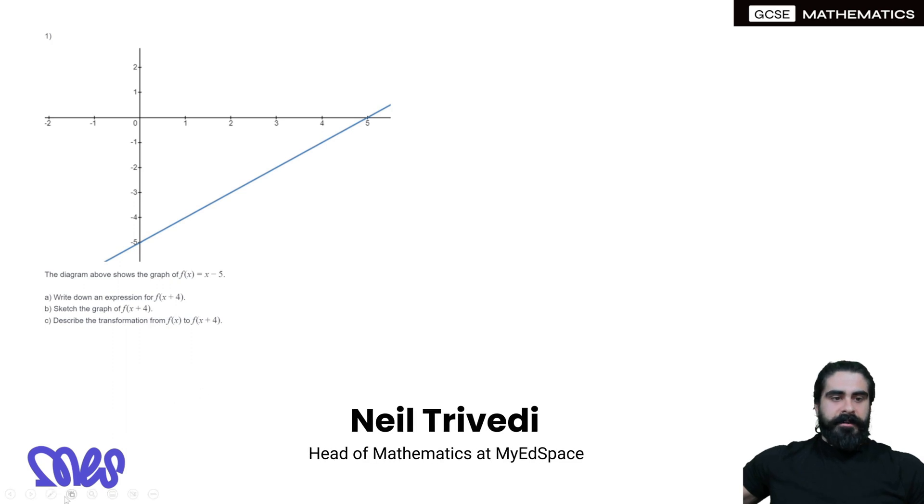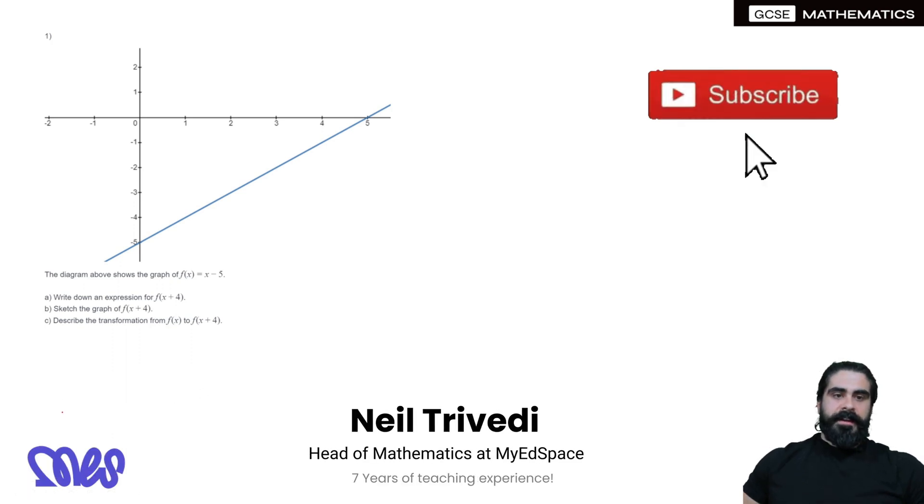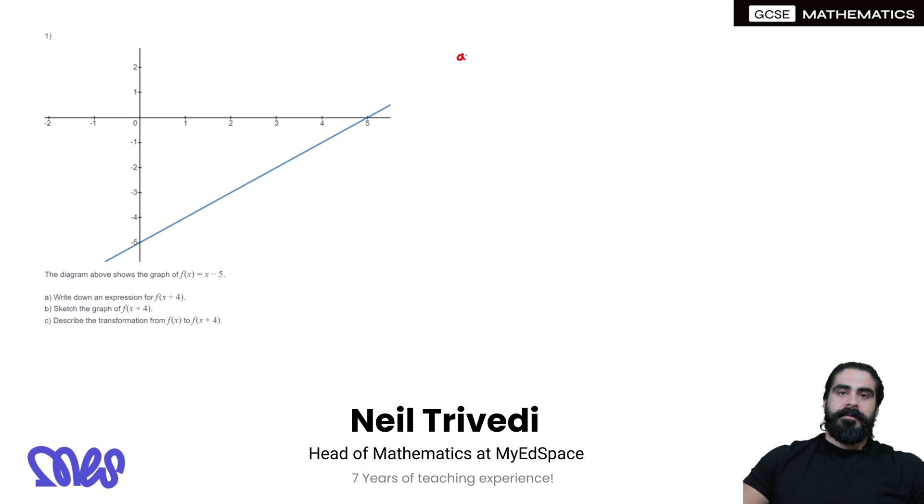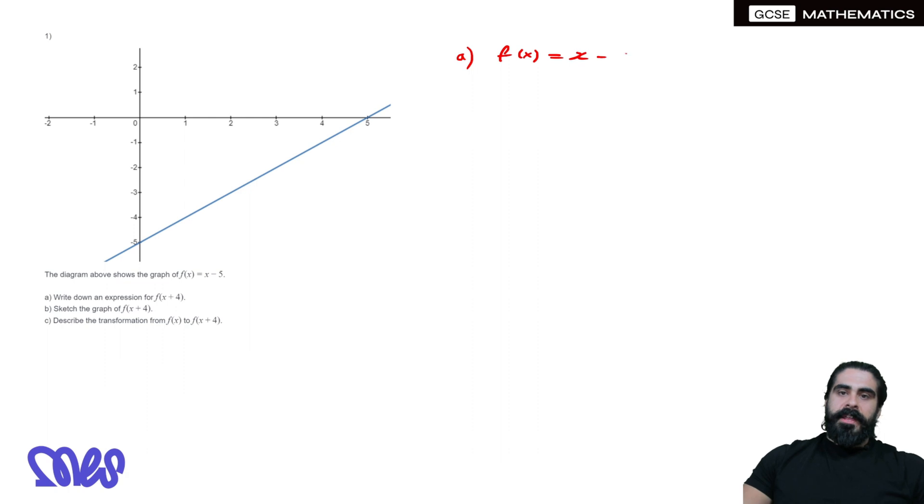Question 1: The diagram above shows the graph of f(x) = x - 5. Write down an expression for f(x + 4). Remember what that means.